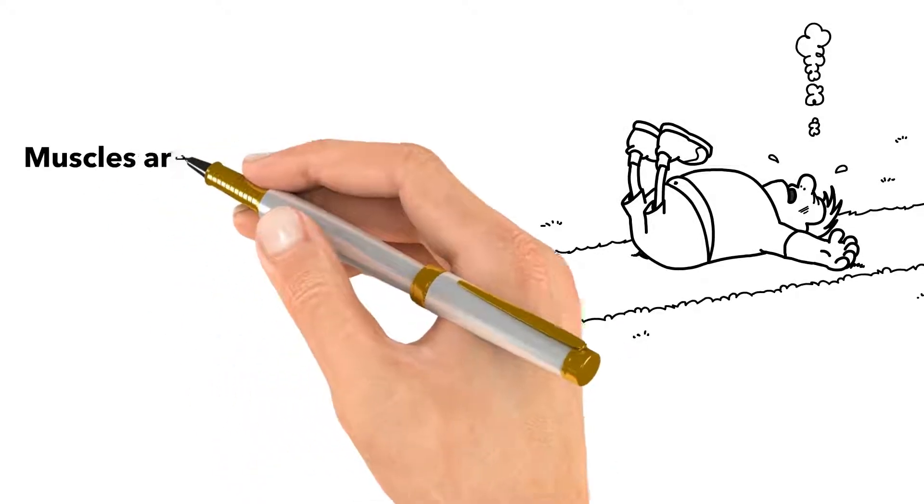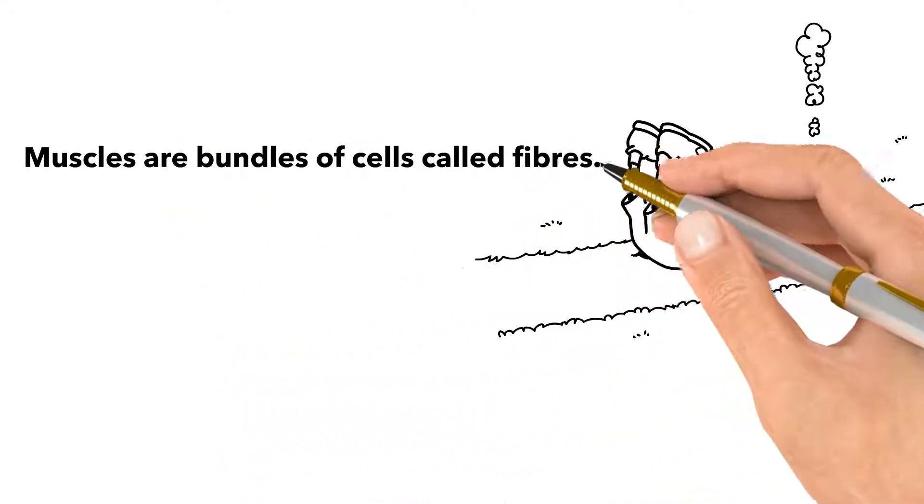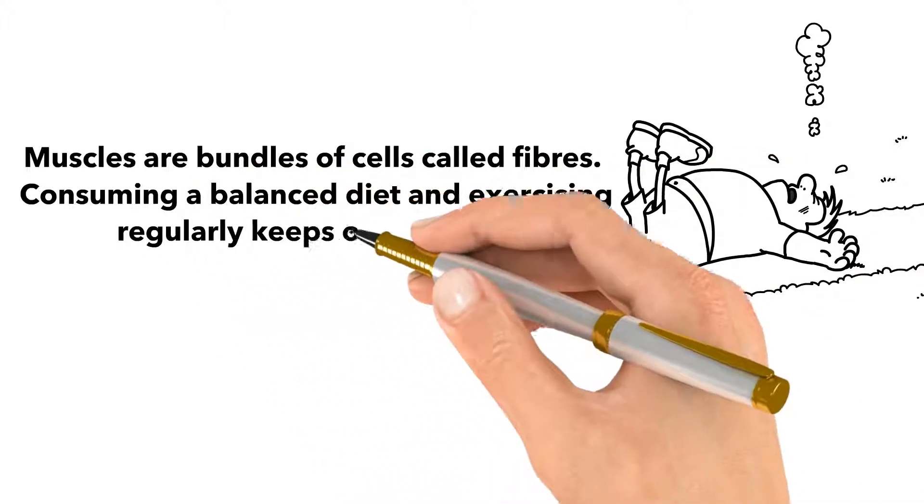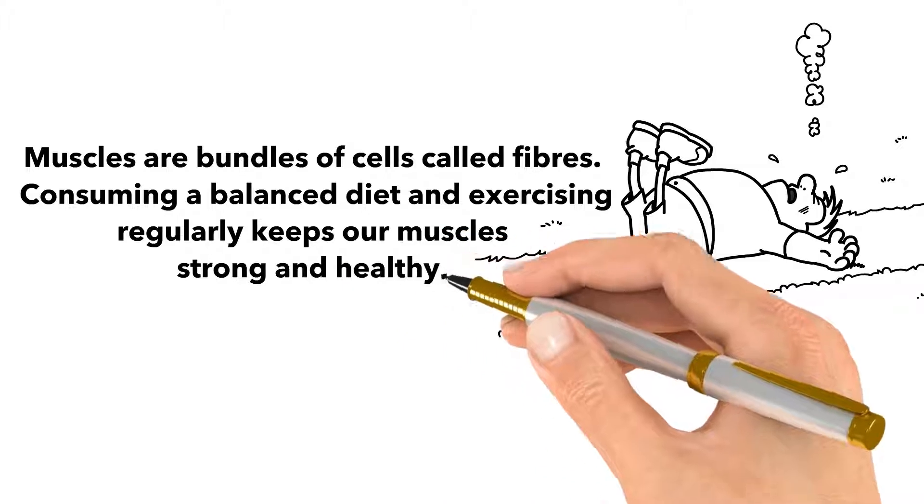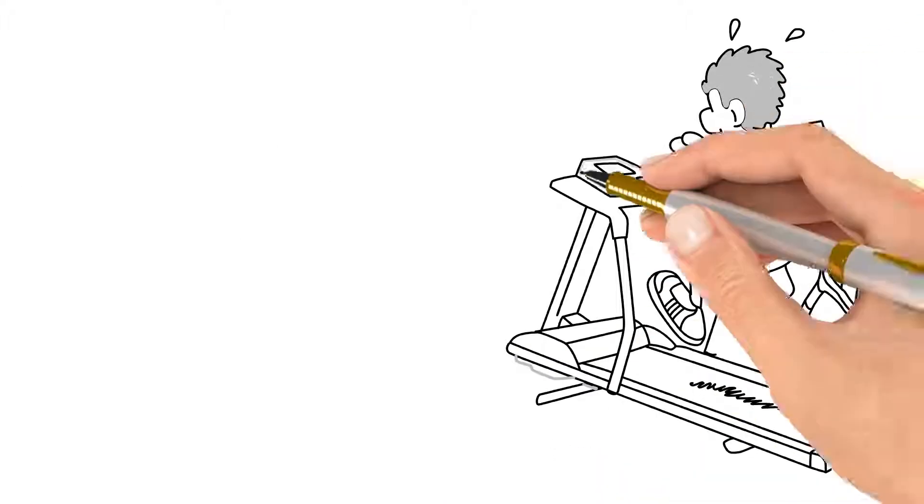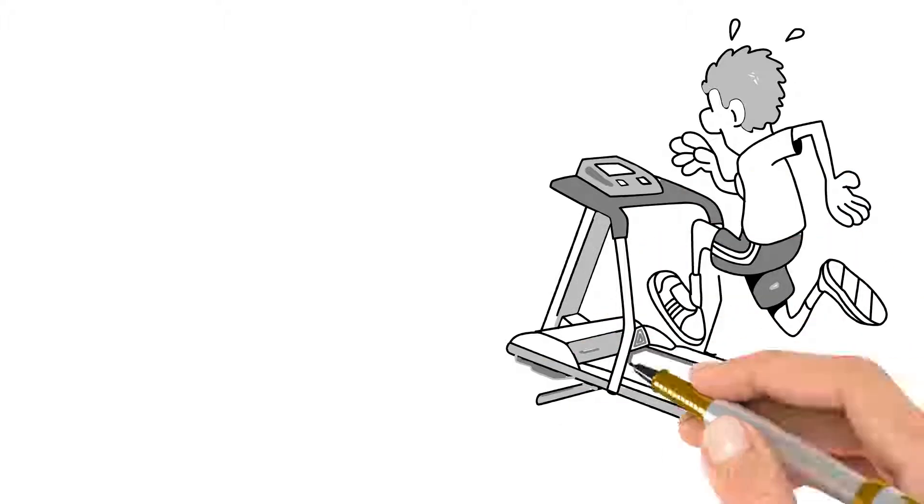Muscles are bundles of cells called fibers. Consuming a balanced diet and exercising regularly keeps our muscles strong and healthy. Exercises that increase our heart rate and work the muscles help make our bodies stronger.